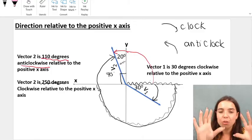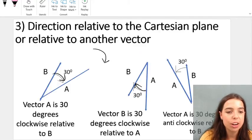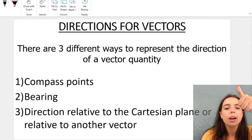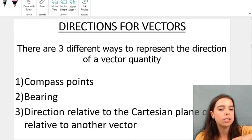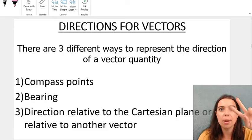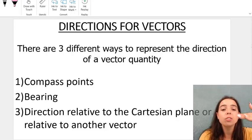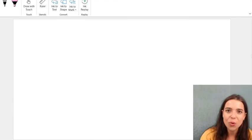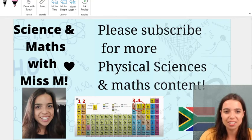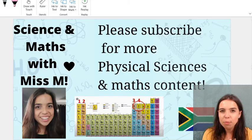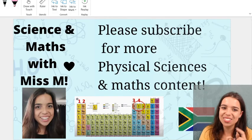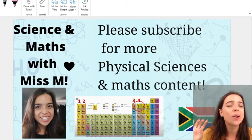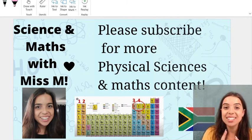So if you can remember these different ways of stating the direction of vectors. Going back, we've got our compass points north of east, east of north. We've got bearing, and we've got direction relative to the positive x-axis. You will know how to quote the directions of your vectors. Please remember to follow me, subscribe. You can also follow me on TikTok. I'm at Miss M Martens, and I'll be doing loads more videos on vectors and Newton's laws.